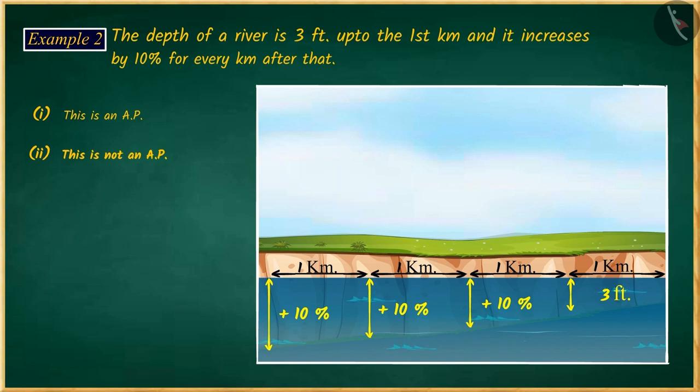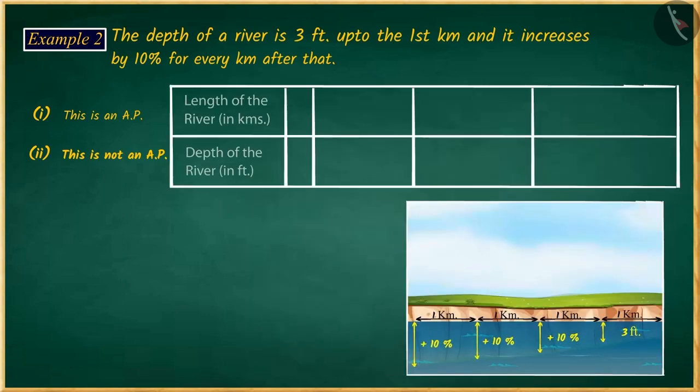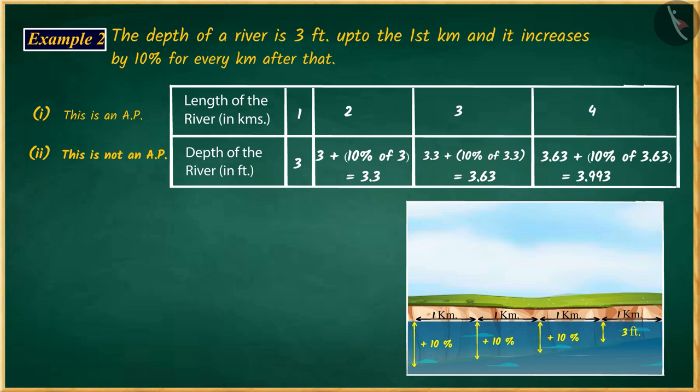Let us first write a list for the given situation. According to the question, the depth of the river increases by 10% with every kilometer. That is, to get each term except the first term, 10% of the previous term must be found and added to the same. This is how we get a list.